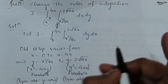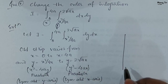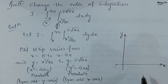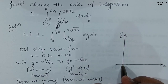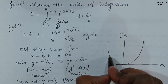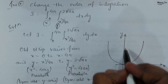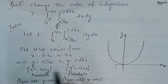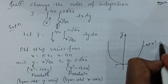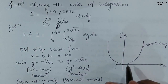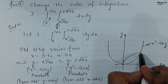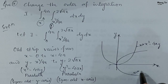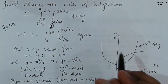Now we will draw the two parabolas on the coordinate axes. The first parabola, symmetric about the y-axis, has equation x² = 4ay. Drawing the second parabola, which is symmetric about the x-axis, has equation y² = 4ax. We have now drawn both parabolas.